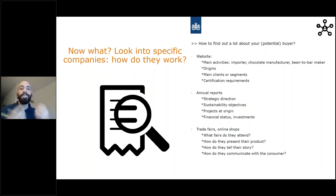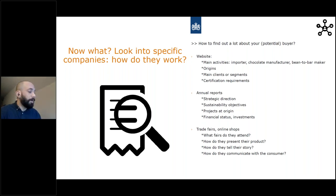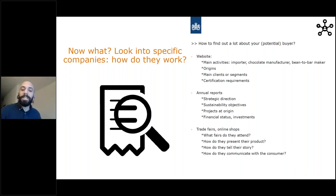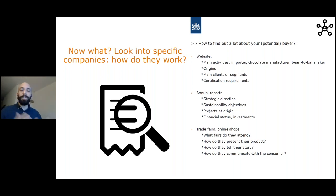These are questions to ask when visiting company websites, because this will help you not waste too much time finding suitable matches. Another very powerful tool available through company websites is their annual reports. Annual reports can tell you the company's strategic direction, sustainability objectives and projects, financial status, and investments — showing what kind of partner they can be on the market. Also check which trade fairs they attend, how they present their products both in trade fairs and online, and how they communicate the message from a producing community to the consumer, so you can understand their priorities and principles.